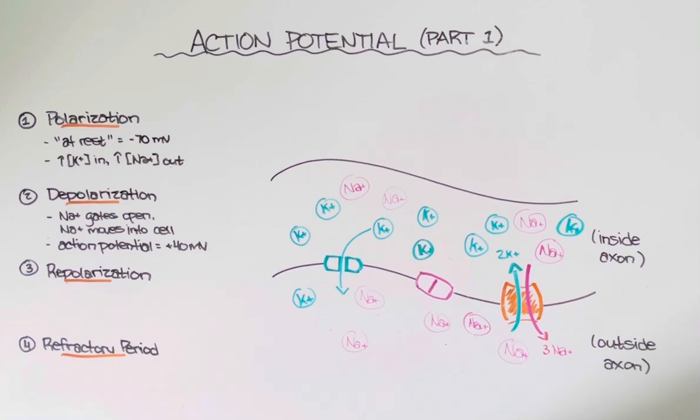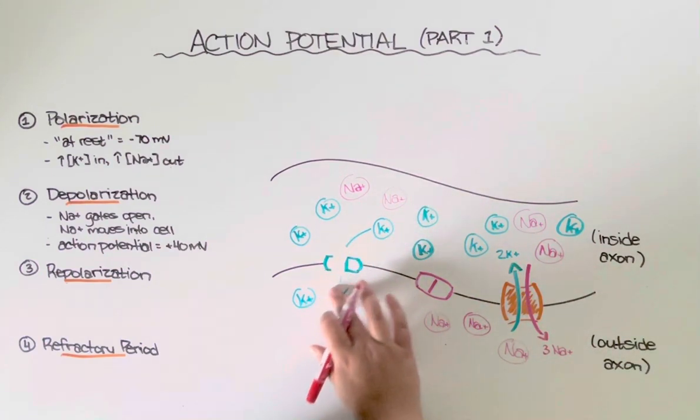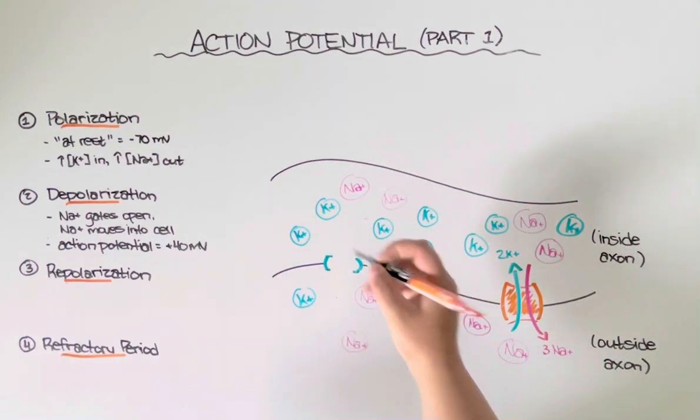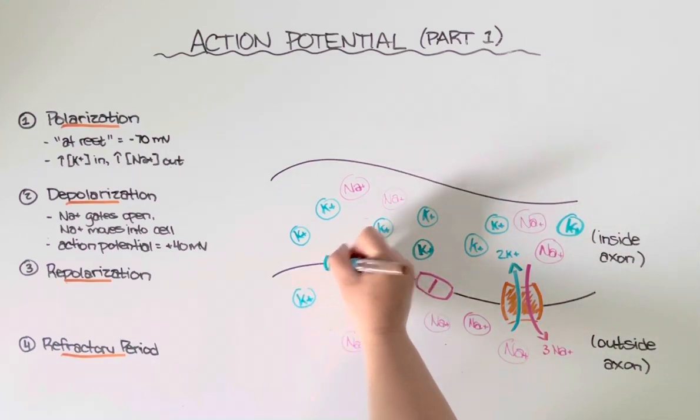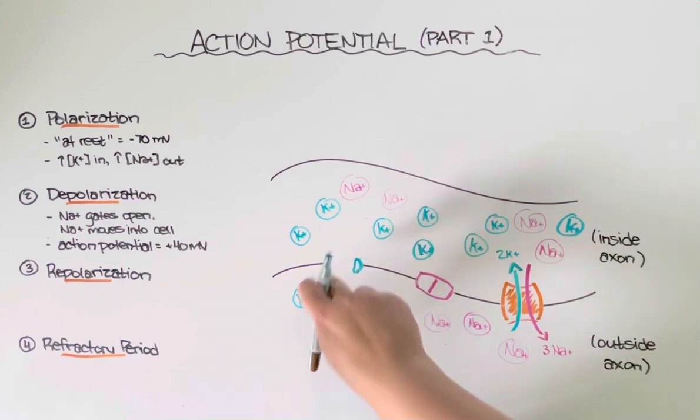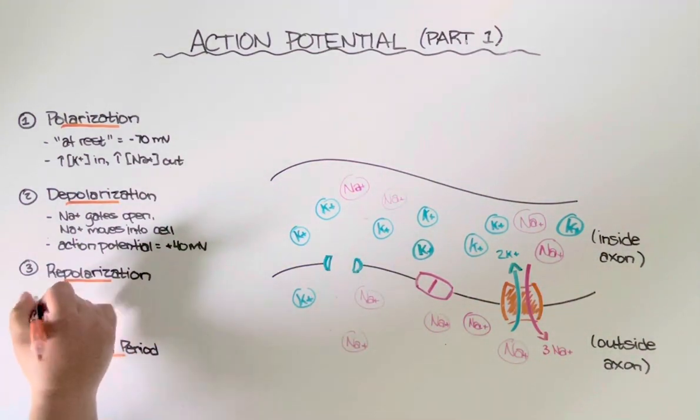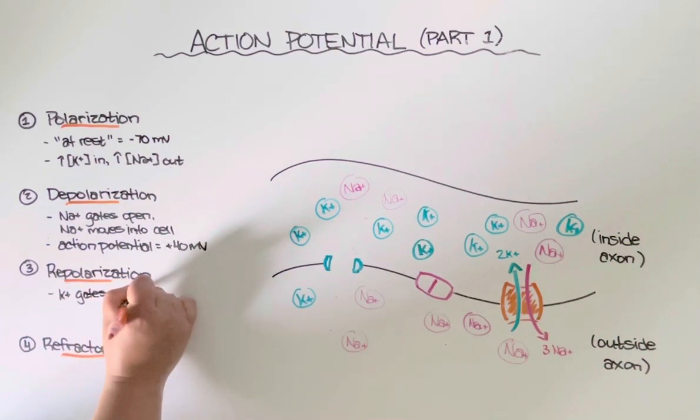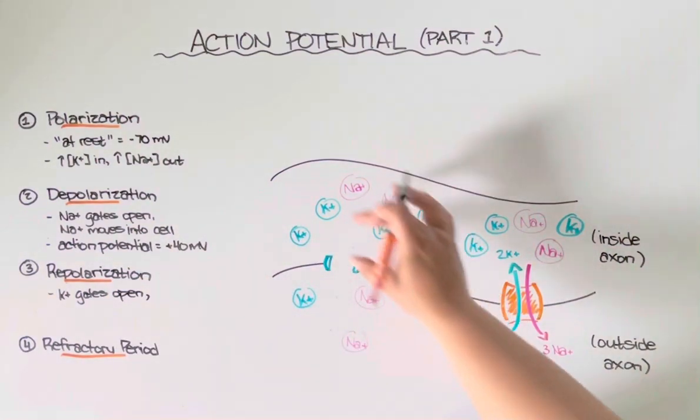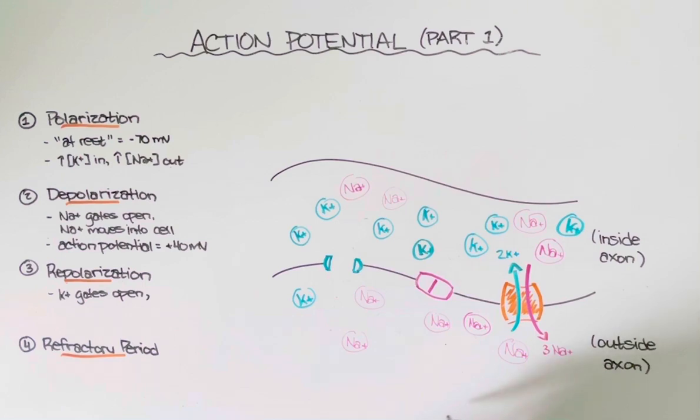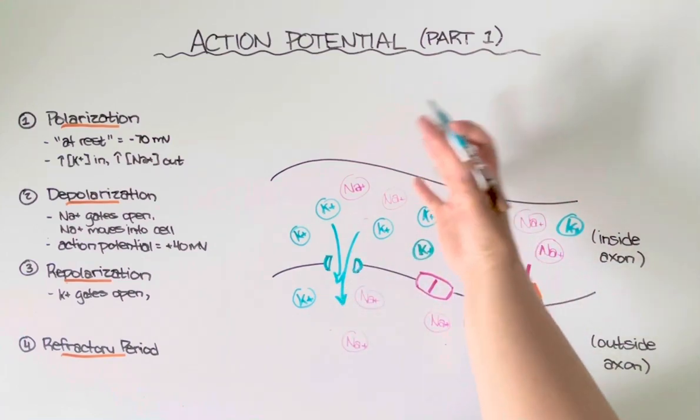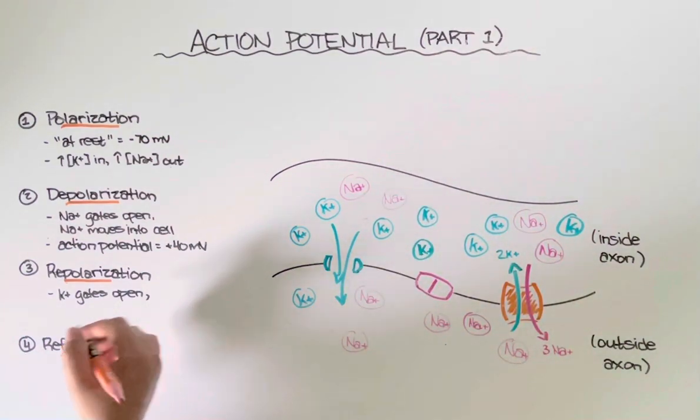So repolarization begins by the closing of the sodium channels and the opening of potassium channels. And I don't just mean a little bit leaky, I mean they open all the way. So when the cell reaches positive 40, that's the voltage that triggers the opening of those channels there. So potassium gates now open. And because we have a high concentration of potassium inside the cell, then you guessed it, potassium is going to move out. So it's going to flood out of the cell, causing the cell to become more negative.